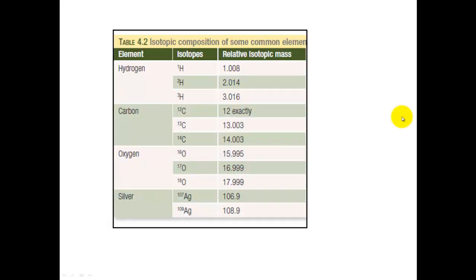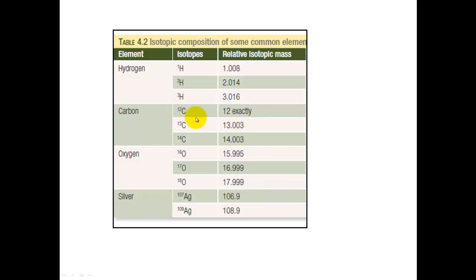The isotopic composition of some common elements is taken from your textbook. You'll see that different isotopes have different isotopic masses depending on how many neutrons they have. These figures are worked out based on carbon-12 having exactly a mass of 12, and everything else has been calculated relative to carbon-12's mass.